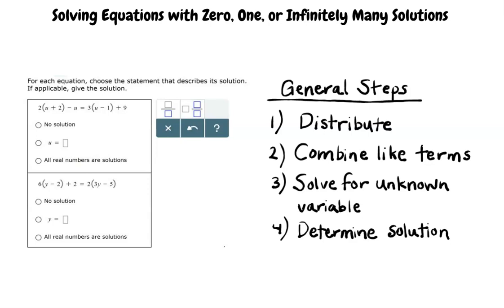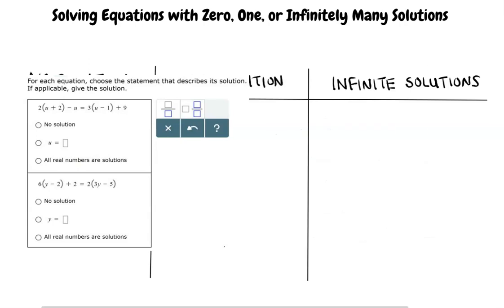That doesn't seem too bad, but how am I supposed to know if there is zero, one, or infinitely many solutions? Great question.